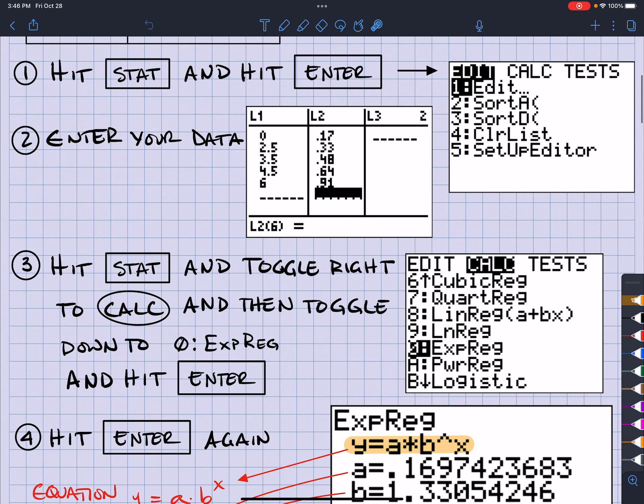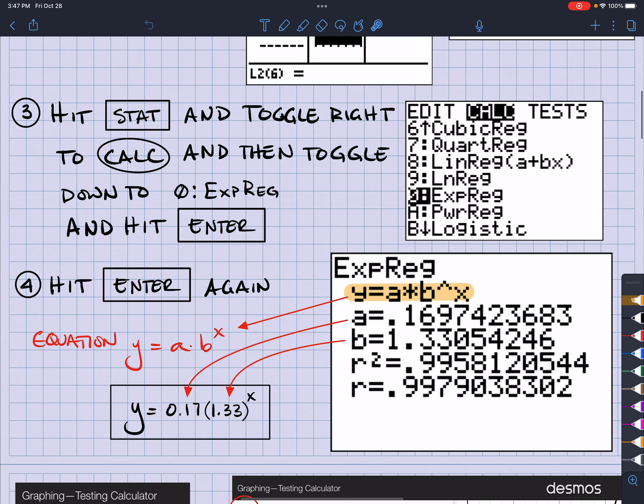So, it's going to show up this menu right here. But we're going to toggle over to the right and hit CALC. So, we're going to toggle to the right to CALC and then toggle down to 0, exponential regression, and hit ENTER. And when we hit ENTER, we're going to hit ENTER again because that's what we want.